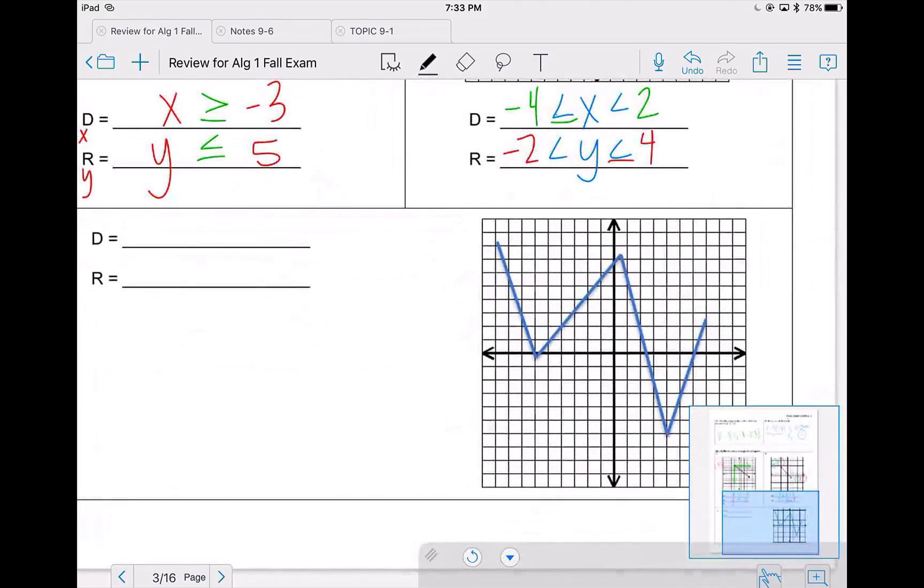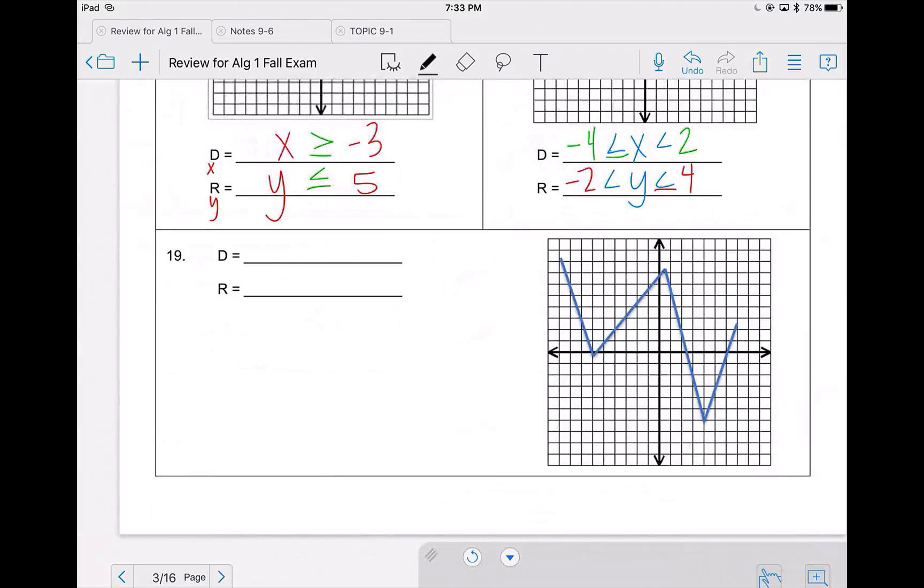For 19, domain is still looking at your x value. So my lowest x value is out here at a negative 9. And we assume that there's a value there because we can't see that there's not. And it goes all the way out to a positive 7. My y's from bottom to top start all the way down here at a negative 6 and go all the way up to a positive 8. So remember, domain is x, range is y's, x's go left to right, domain goes bottom to top.